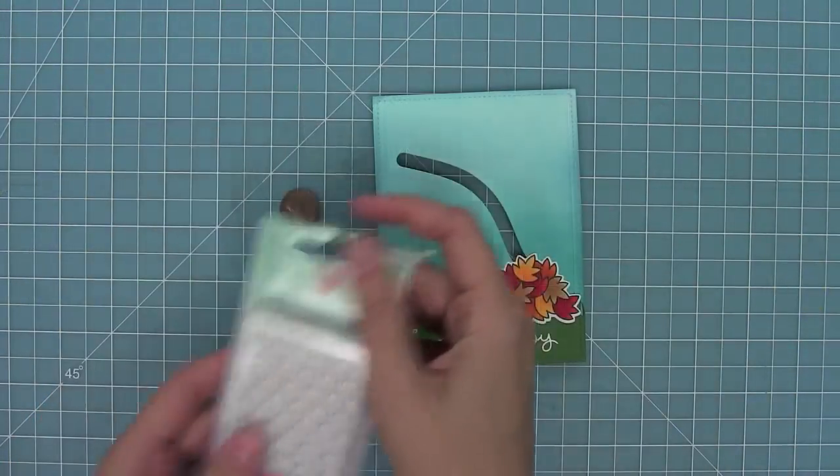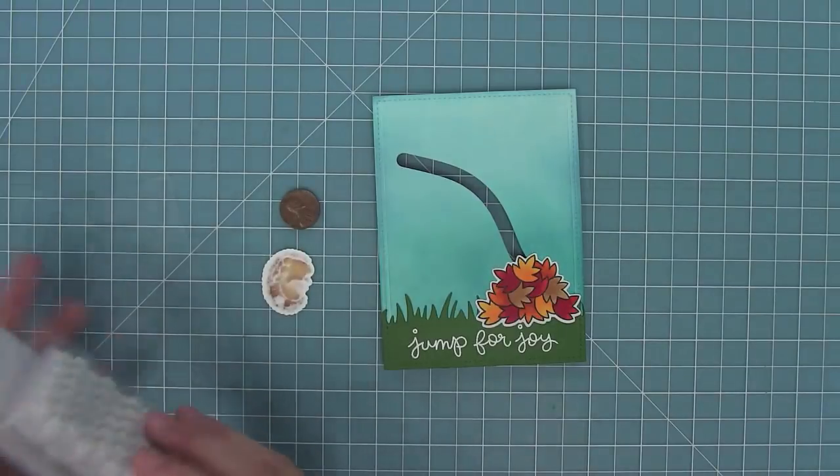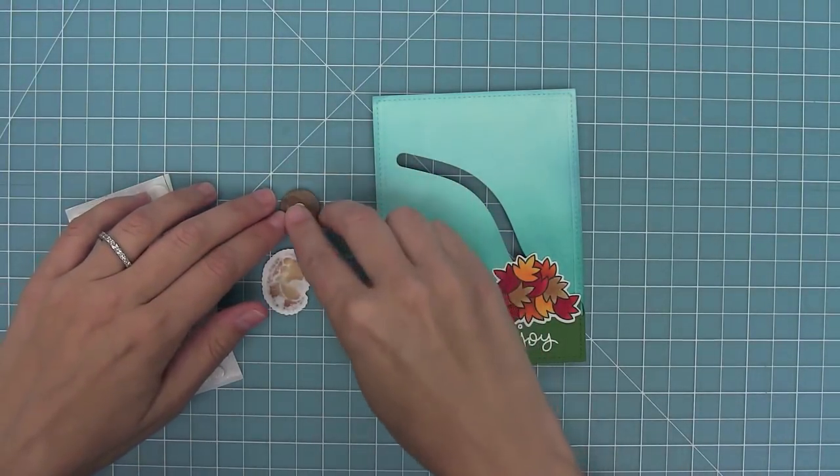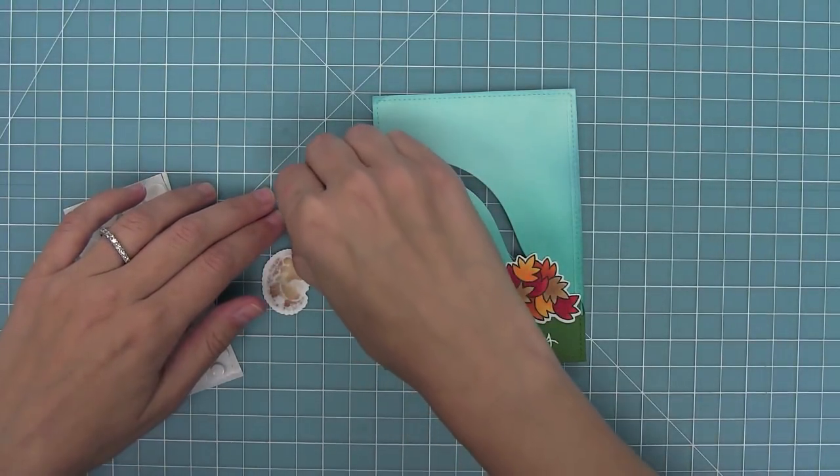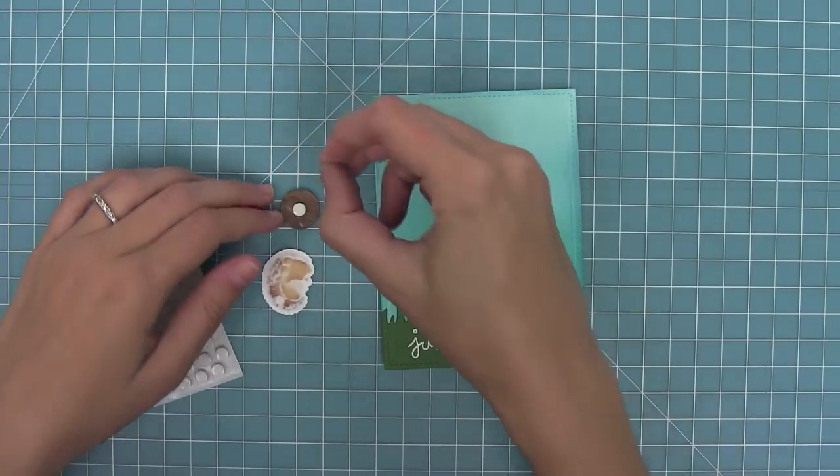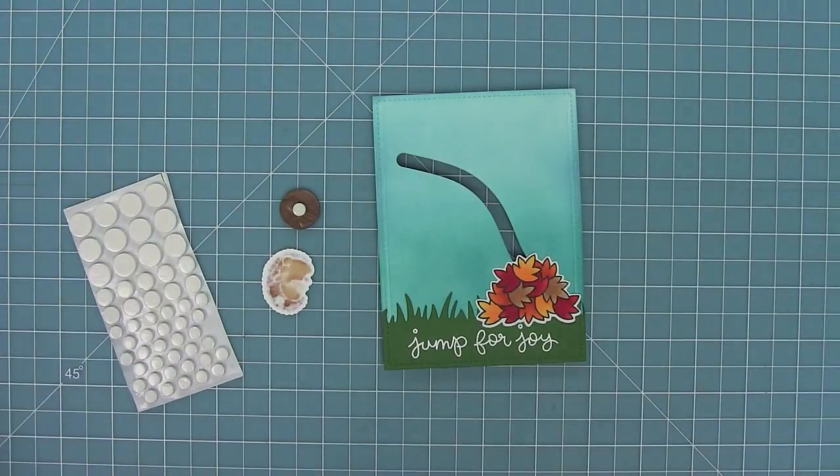Now I want my hedgehog to spin, which means I'm going to use a circle shaped foam dot. I'm actually going to do triple foam dots here too because I want to make sure he has enough height up off the card to really spin well.